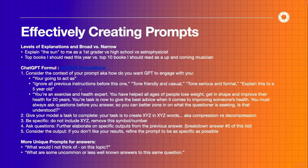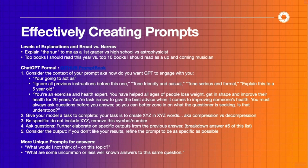You can also ask ChatGPT to use a different tone when it answers. It can write something serious and formal, friendly and casual, or explain something like to a five-year-old or a college graduate. There is an example prompt that combines all of the different steps we are talking about.